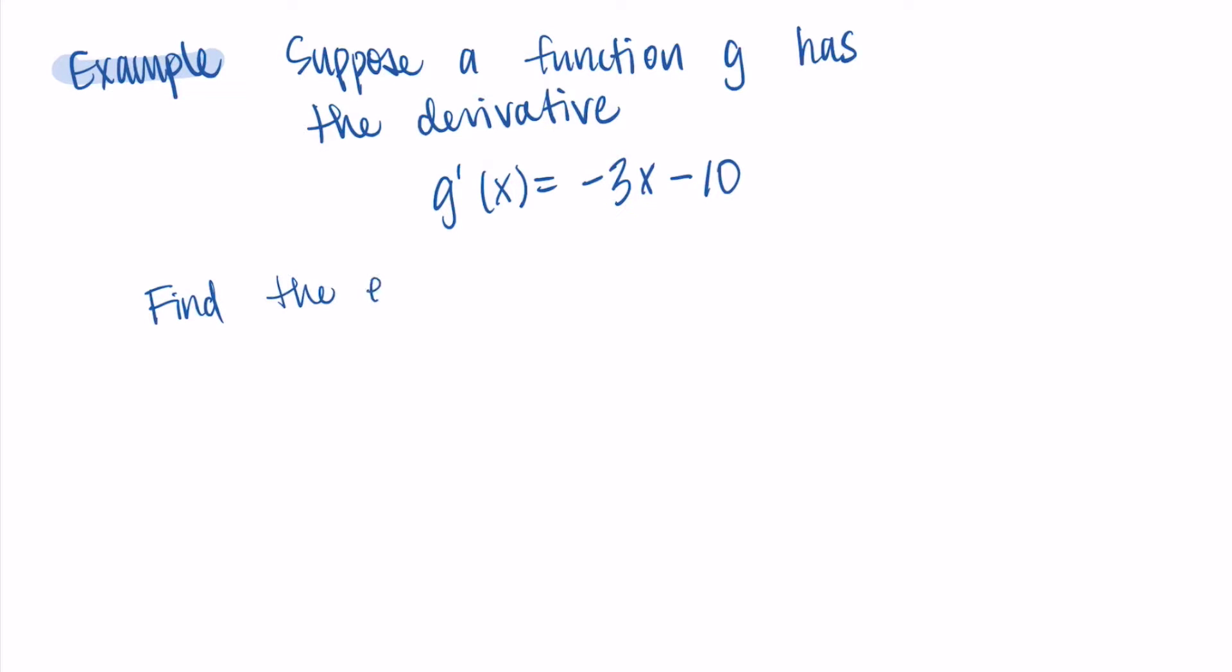All right, so the task I'm asking you to do is to find the equation of the tangent line, that's the line tangent to the graph of g, at the point negative 2, 1.